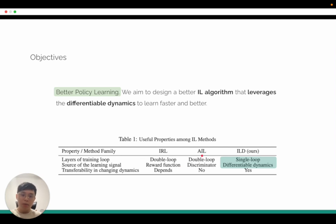AIL is the Adversarial Imitation Learning where it learns a generator and discriminator and then uses a discriminator to provide the learning signal to train the inner agent. In this case, we propose ILD which uses differentiable dynamics directly to provide the learning signal without learning another intermediate learning signal such as reward function or discriminator, and hence we have only a single loop design and therefore learn much faster and better.